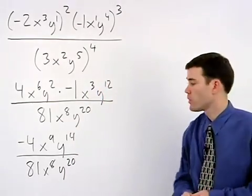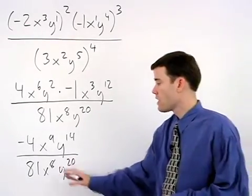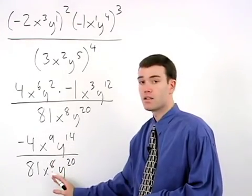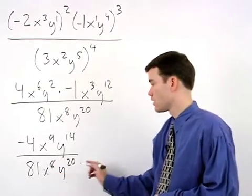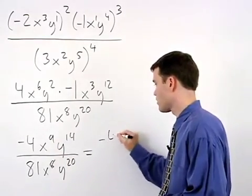Finally, we apply our quotient rule. And remember that the quotient rule states that when you're dividing powers that have the same base, simply subtract their exponents. So we have our coefficients of negative 4 over 81.